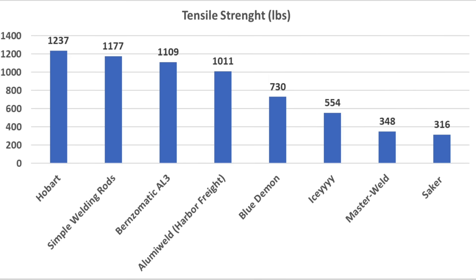Both Hobart and Simple were stronger than the bolts, with the bolts breaking at 1,237 and 1,177 pounds, respectively. Burnz-O-Matic came in third at 1,109, and Harbor Freight's Aluma Weld fourth at 1,011. I have to admit, these low-temperature welding rods are a lot stronger than I had anticipated.